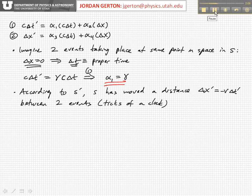Now, the two events which are taking place at the same point in S, maybe they're just two ticks of a clock. And so according to S prime, that is the moving frame, the clock, or S, has moved a distance delta X prime is equal to minus V times delta T prime between the two ticks of the clock.